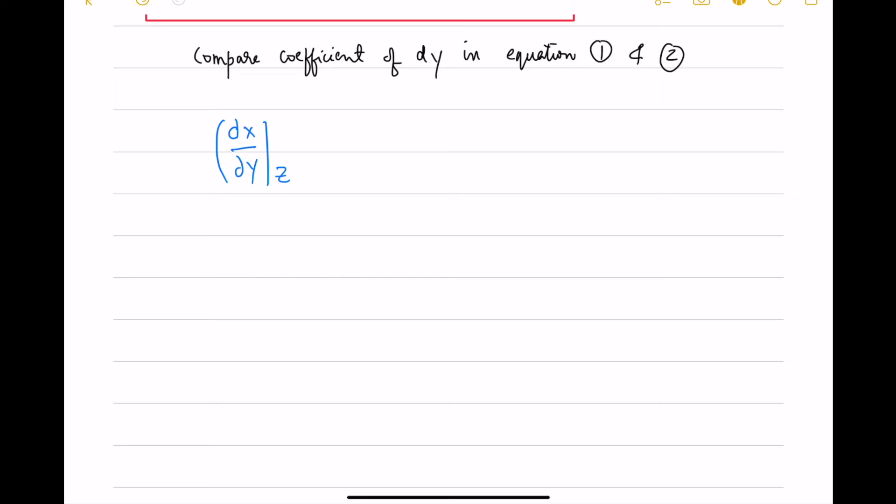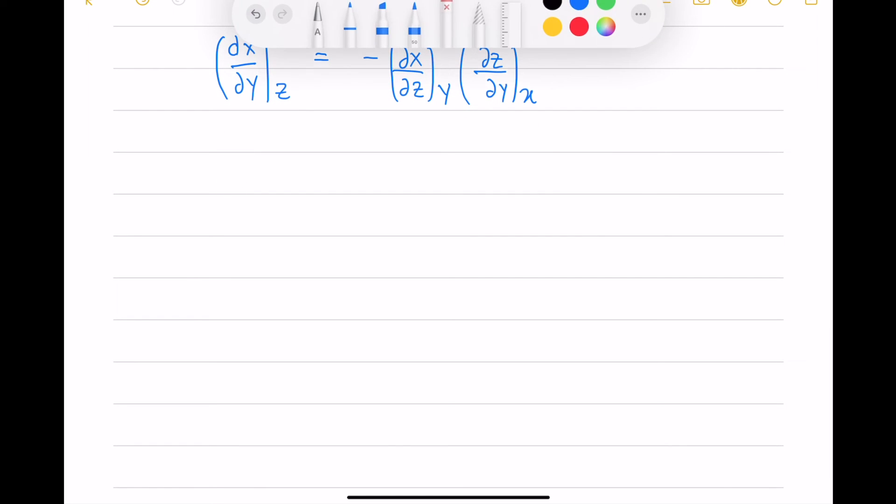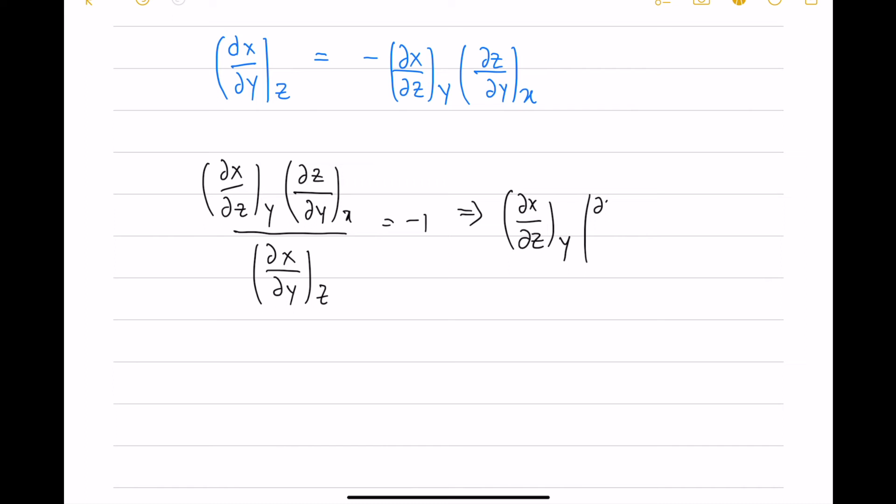So comparing the dy coefficients in equation 1 and 2, we have the three terms. Transferring all the coefficients to one side gives us the ratio relation divided by ∂x/∂y. This is the ratio relation.